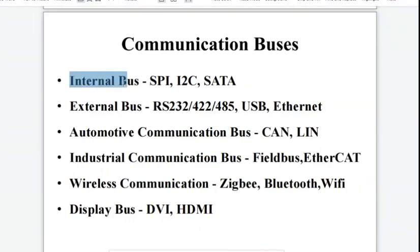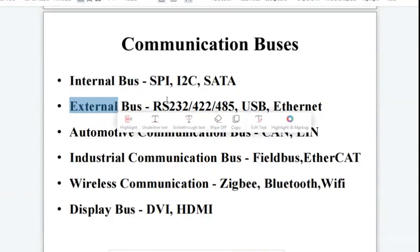For example we have internal buses SPI, I2C. For SPI bus we have SPI protocol, I2C bus we have I2C protocol. External buses RS-232, 422, 485, USB, Ethernet. For each of these buses we have respective protocols.